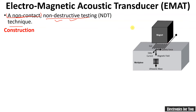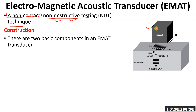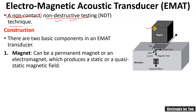This is the electromagnetic acoustic transducer, and it consists of two main parts. The first one is the magnet — this magnet may be an electromagnet or a simple natural magnet. The function of this magnet is to produce a static magnetic field.